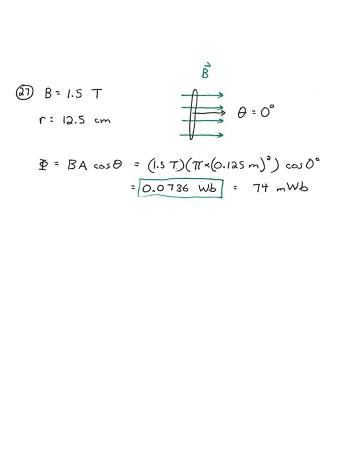Number 27 says a 1.5 tesla magnetic field lies perpendicular to a 25 centimeter diameter circular wire loop. Here I've drawn the picture, and once again, as we draw the picture, we can see that the relevant angle, theta, is 0 degrees.